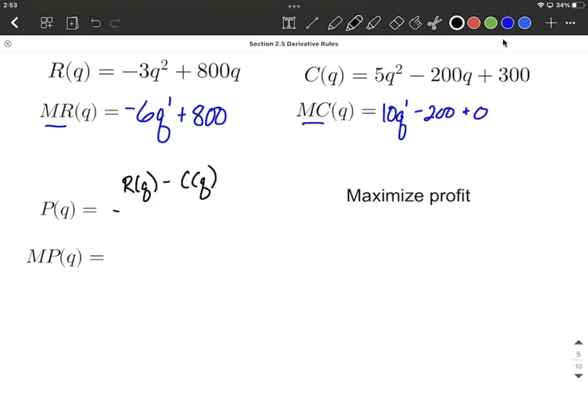Okay, so our revenue function, negative 3q squared plus 800q minus, and here's where everyone makes their little mistakes, you want to subtract away the entire cost function. So I'm going to subtract away 5q squared minus 200q plus 300.